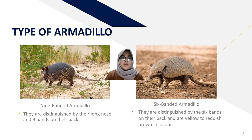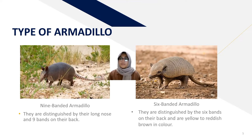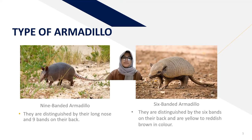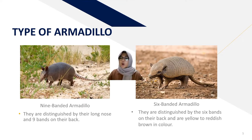There are six types of armadillo animals: the nine-banded armadillo and the six-banded armadillo. Nine-banded armadillos are found in America and Africa, distinguished by their long nose and nine bands on their back. Six-banded armadillos live around Argentina and Brazil, distinguished by six bands on their back and a yellow to reddish-brown color.